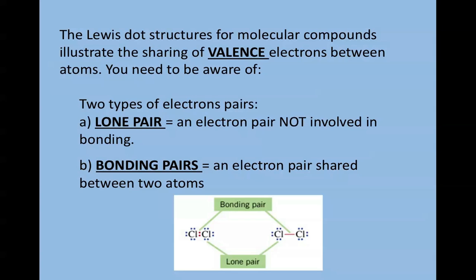One is lone pair—an electron pair not involved with bonding. The blue dots in diatomic chlorine represent the lone pair, those that belong to a single atom and are not being shared. The bonding pairs, shown in red, represent those shared between two atoms.